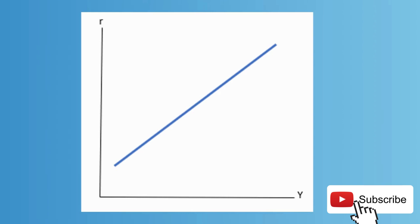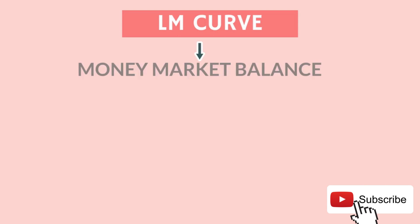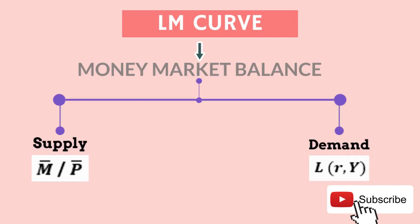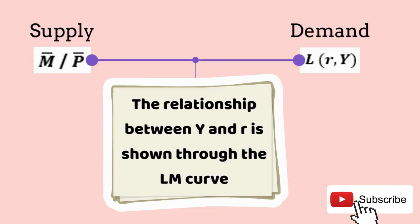The LM curve shows market equilibrium — specifically, the balance between money supply and money demand. The money supply is the domain of monetary policy. In real terms, money supply is M-bar over P-bar, which is fixed. The demand for money is a function of interest rate (R) and income (Y). At equilibrium, M-bar/P-bar equals L(R, Y), and the relationship between Y and R gives us the LM curve.